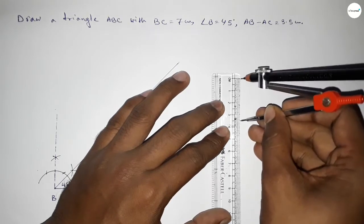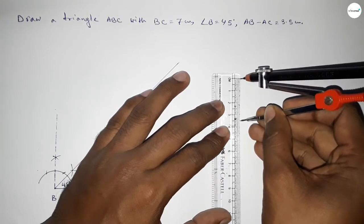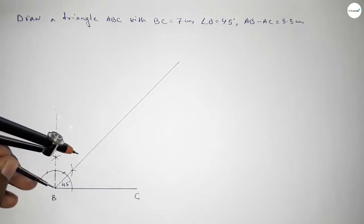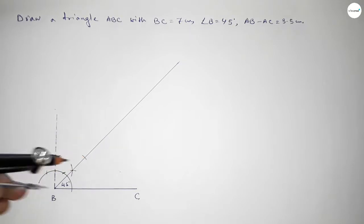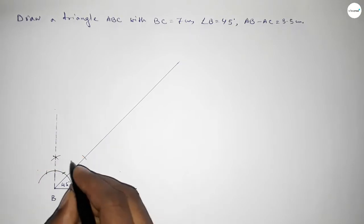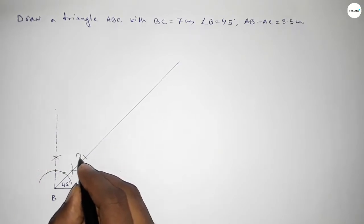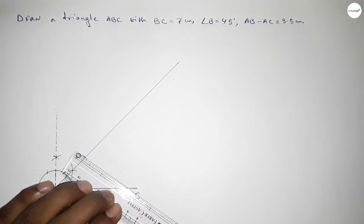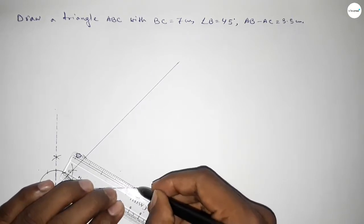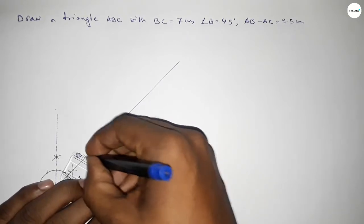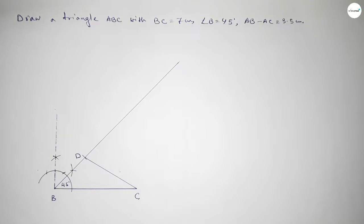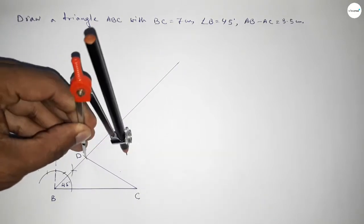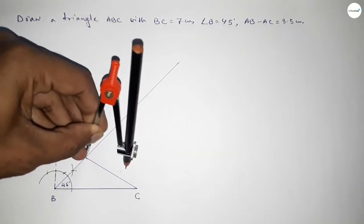Now taking 3.5 centimeters using the compass and putting the compass on point B, cutting here and taking here point D. So BD equals 3.5 centimeters. Now joining D and C.